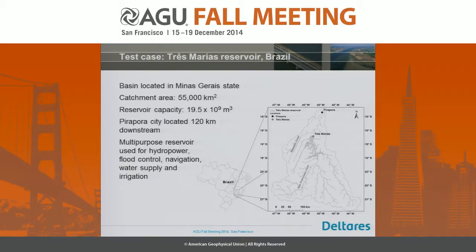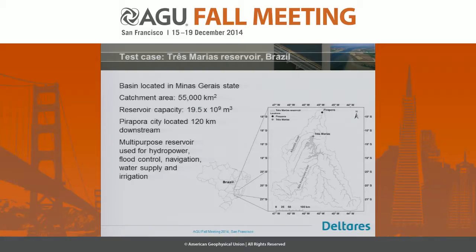The first test case is Três Marias reservoir in Brazil, located in the southeast in Minas Gerais state, with a catchment area of about 55,000 square kilometers. This is a multipurpose reservoir used for hydropower, drinking water supply, navigation, and flood control. These reservoirs are primarily operated by a national coordinator in Brazil, but control is taken over by the local operator CEMIC in case of floods. Our focus here is flood mitigation.